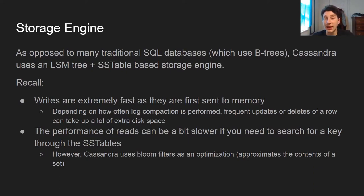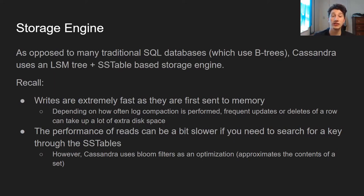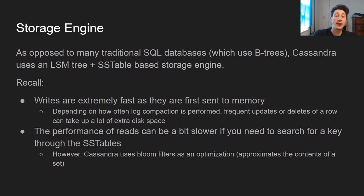In terms of the storage engine, Cassandra is optimizing for really fast writes because in certain applications with a ton of users, you need to be able to write quickly, and SQL doesn't always support that — especially because it uses B-trees. There are two main types of engines: B-tree-based and LSM-tree-based. Cassandra uses an LSM-tree-based storage. The reason these are so fast is that writes get buffered to an in-memory tree. The downside is that depending on how often log compaction is performed — and remember every single write goes into this table, even updates — it will eventually get compacted to only contain the most updated version of a key.